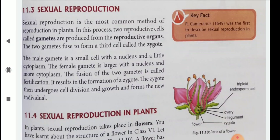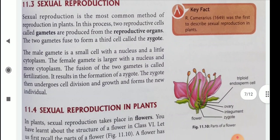So what is sexual reproduction? Sexual reproduction is the most common method of reproduction in plants. In this process, two reproductive cells called gametes are produced from the reproductive organs. The two gametes fuse to form a third cell called the zygote. The male gamete is a small cell with a nucleus and a little cytoplasm. The female gamete is larger with a nucleus and more cytoplasm.